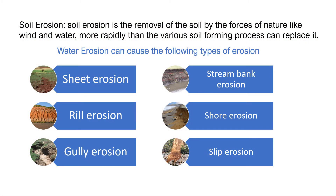Soil erosion refers to the removal of the soil by the forces of nature like wind and water, more rapidly than the various soil forming processes can replace it. This means that the soil forming process is a very slow one, but the removal of the soil can be done very quickly. Generally, there is a balance between the soil forming process and the erosional process.